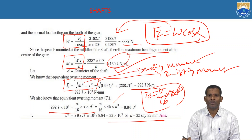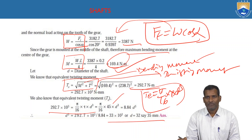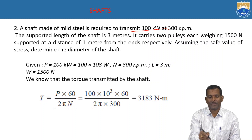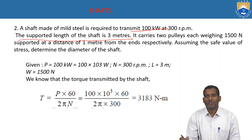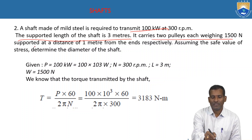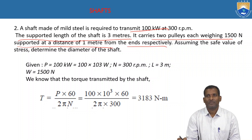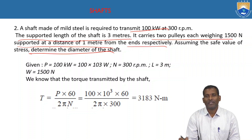Like this, we solve the problem whenever a gear is mounted on the shaft. Now the second problem: a shaft made of mild steel is required to transmit 100 kilowatt at 300 RPM. Its supported length is 3 meters and it carries two pulleys each weighing 1500 Newtons, supported at a distance of 1 meter from the ends respectively. Assume the safe value of stress and determine the diameter of the shaft.